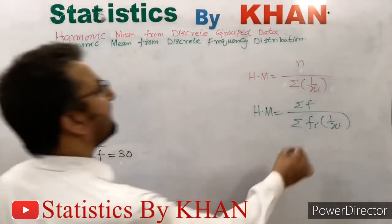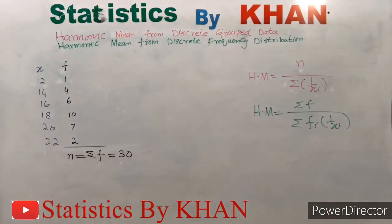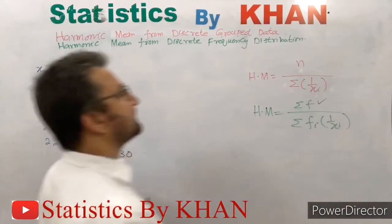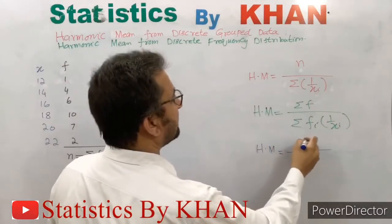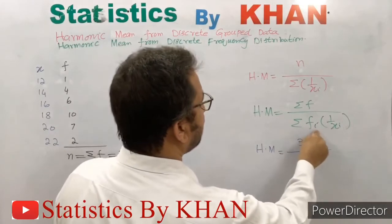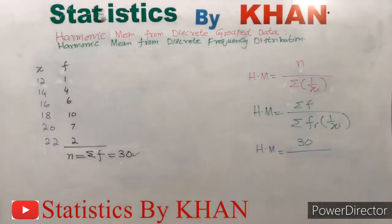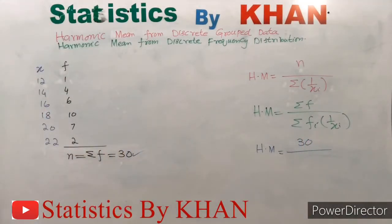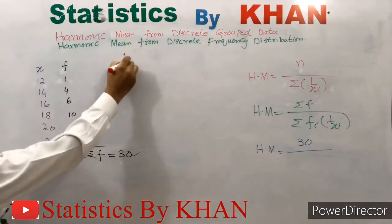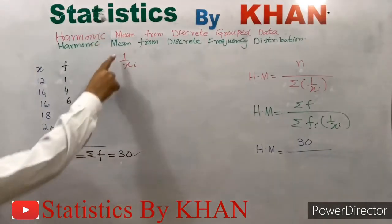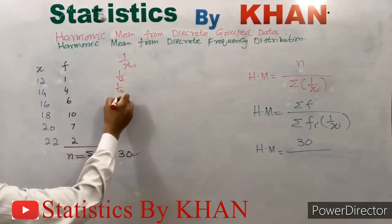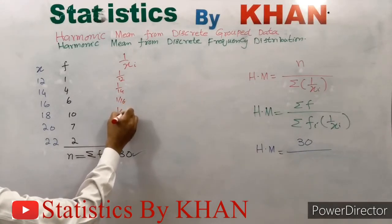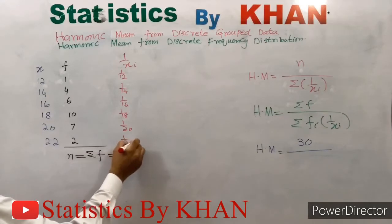From this formula we can identify the steps needed for computation. In the numerator there is summation f, which we have already computed as 30. In the denominator there is summation(fi × 1/xi). For this, we first find the reciprocals of each value of the variable, constructing a column titled 1/xi — meaning we divide 1 by each value: 1/12, 1/14, 1/16, 1/18, 1/20, and 1/22.